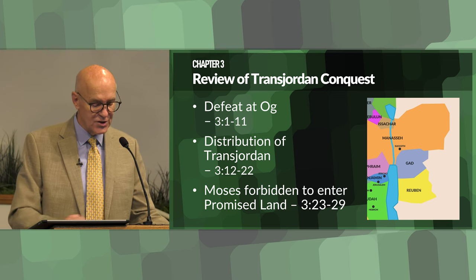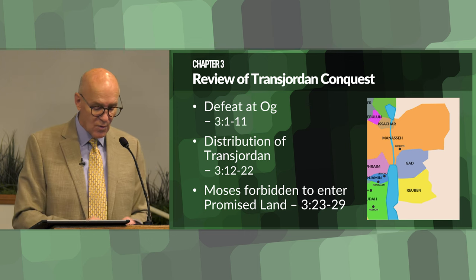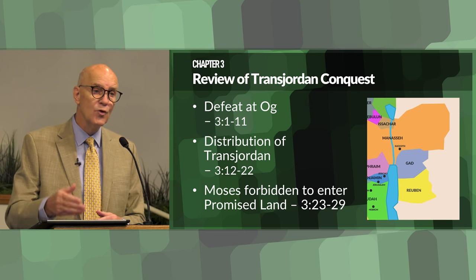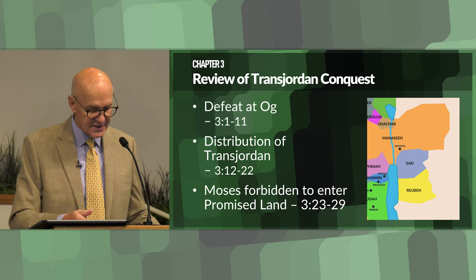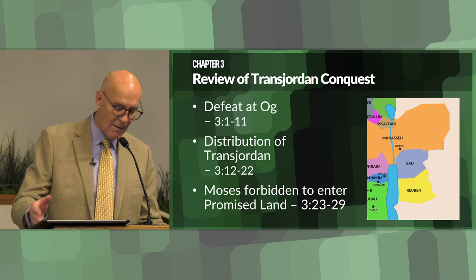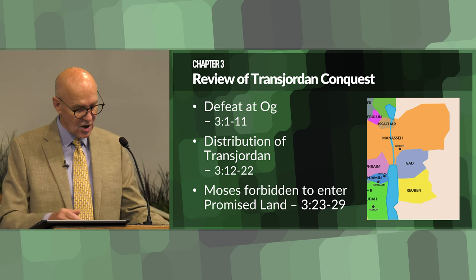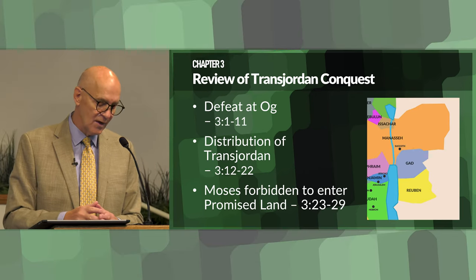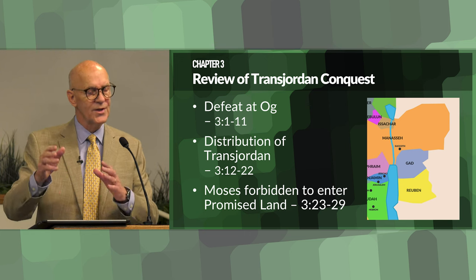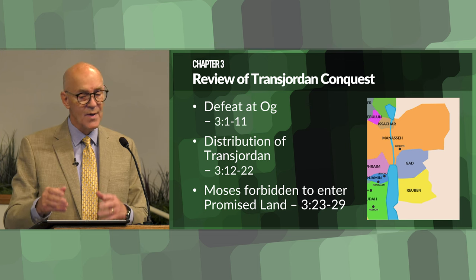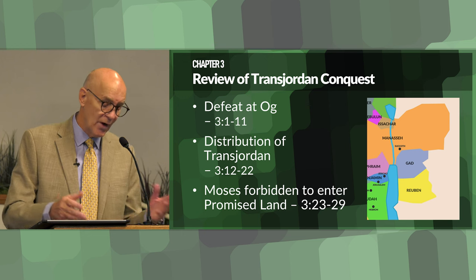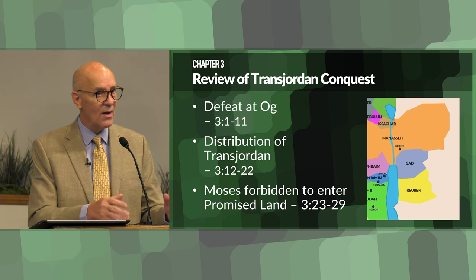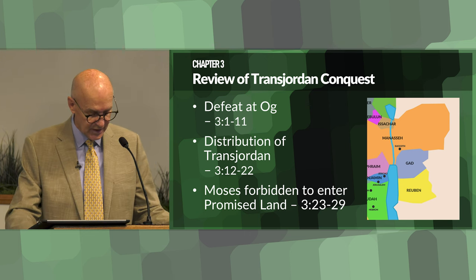There's also information about the distribution of the Transjordan — Deuteronomy 3:12–22. Moses recounts the allocation of land to the tribes of Reuben and Gad and the half tribe of Manasseh. This emphasizes the need for unity and mutual support among the tribes, as those already settled must help others in conquering the rest of Canaan. These three tribes preferred to settle on the eastern side of the Jordan River, and the resolution was that they would leave their animals and families there, but the men would cross the river to help their brethren settle their lands, then return to the east.